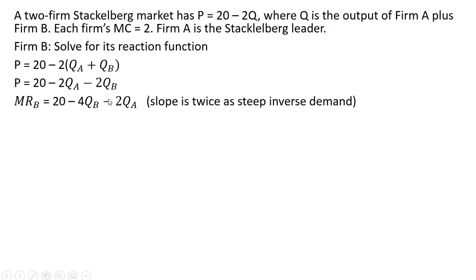So instead of minus 2Q subscript B, we get minus 4Q subscript B. Setting marginal revenue equal to marginal cost and solving for firm B's output.